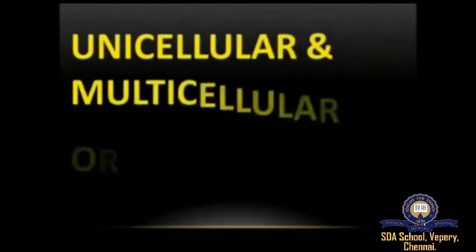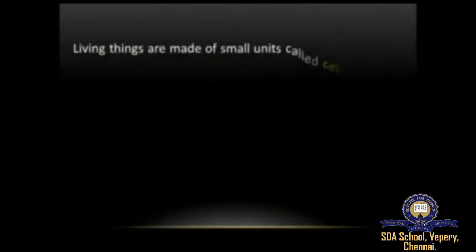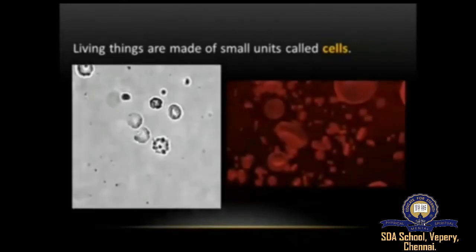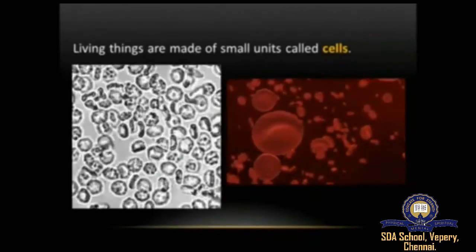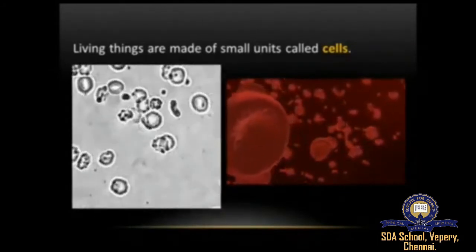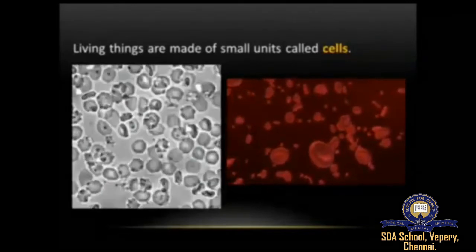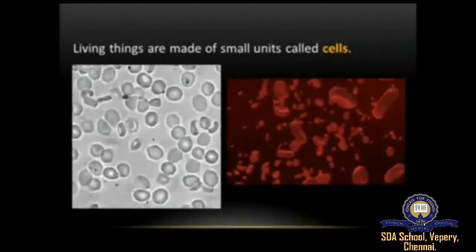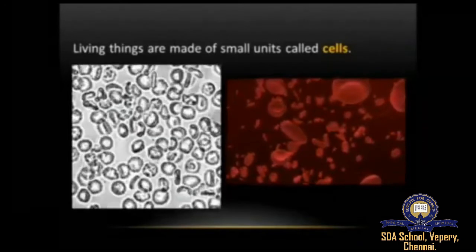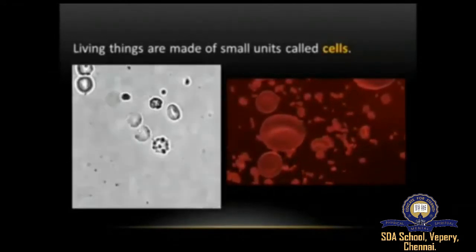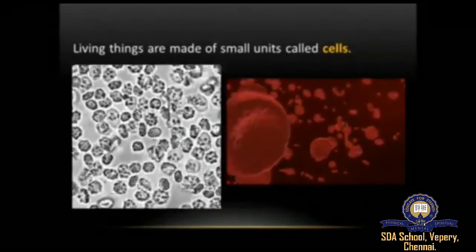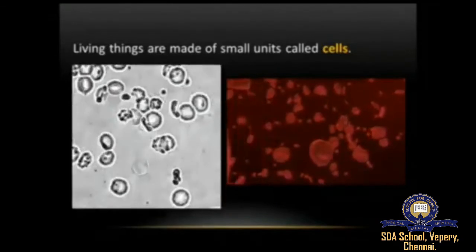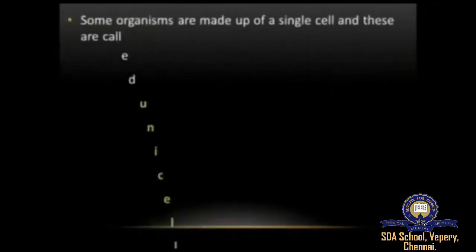Now we'll look into unicellular and multicellular organisms. The living things are made up of small units called cells. All the functions and processes in the body of living things are brought about with the help of these microscopic cells. These cells can be visible only under a microscope, as they are very tiny. Some organisms are made up of a single cell, and these are called unicellular organisms.